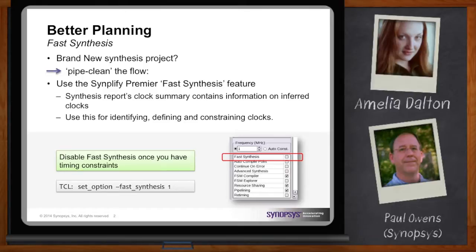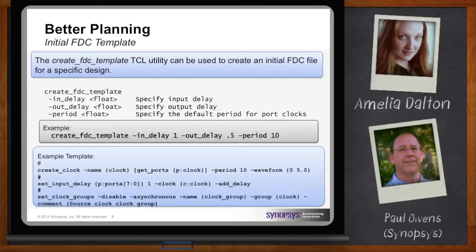Another method is a new tool called Create FDC Template. It's a Tcl utility — very simple. You just specify Create FDC Template, specify your input delay for input pins, output delay, and the clock period. What this does is analyze your design and create what's called your initial FDC template that will have initial constraints, define your clocks, define input and output delays, and try to create asynchronous clock groupings for your clocks.